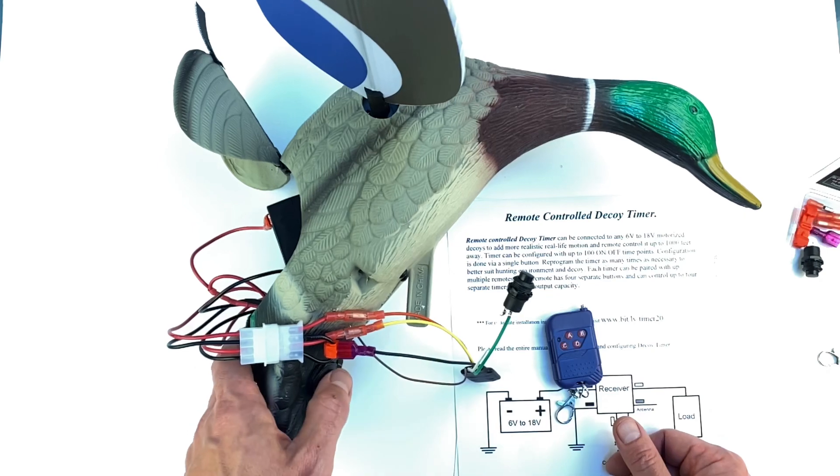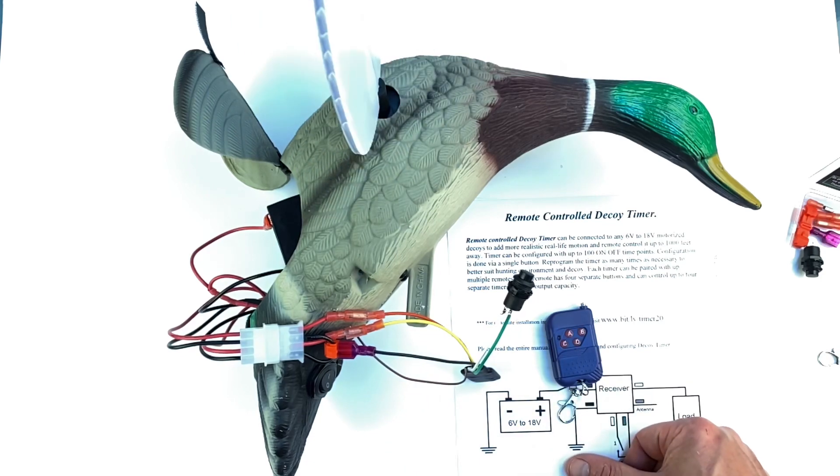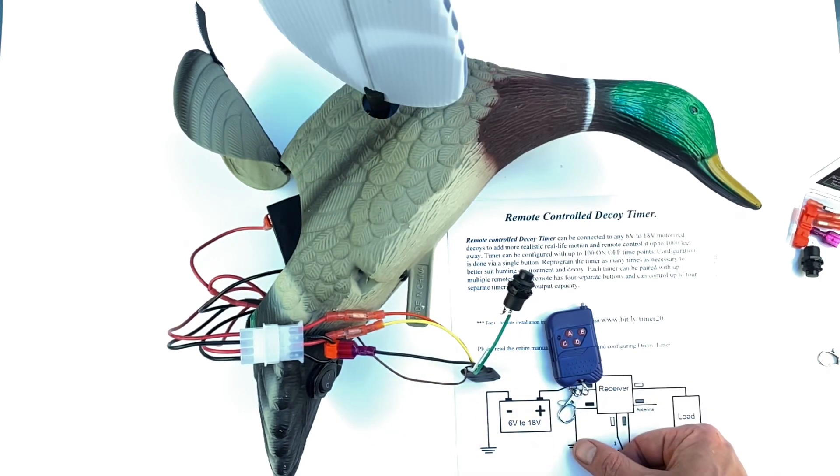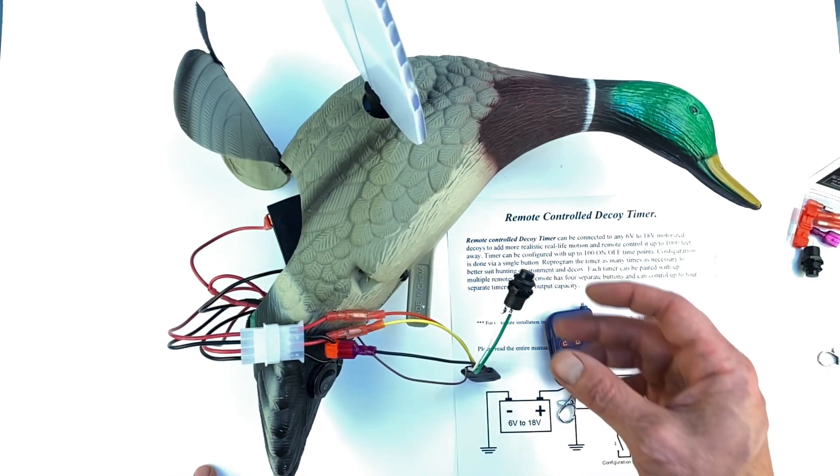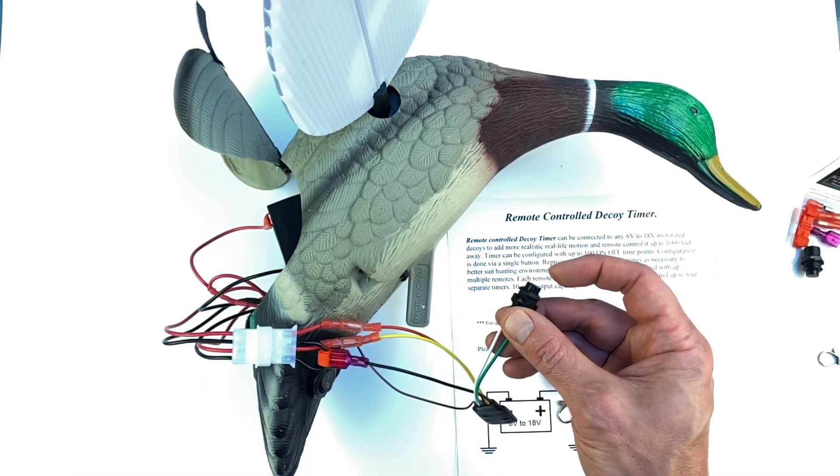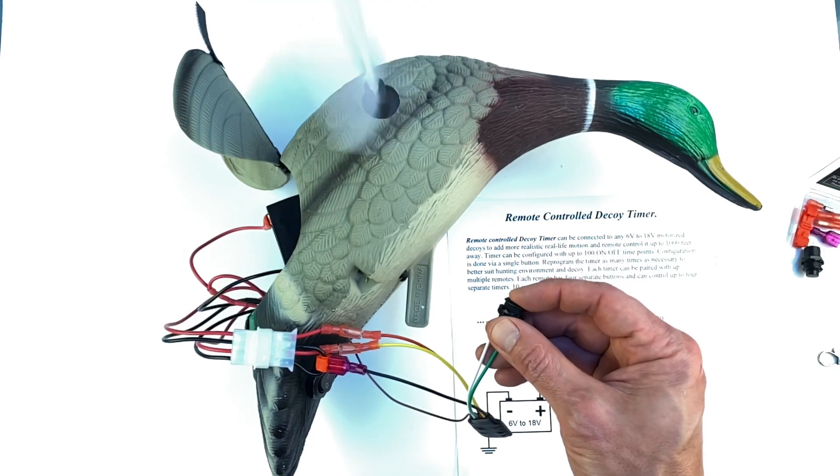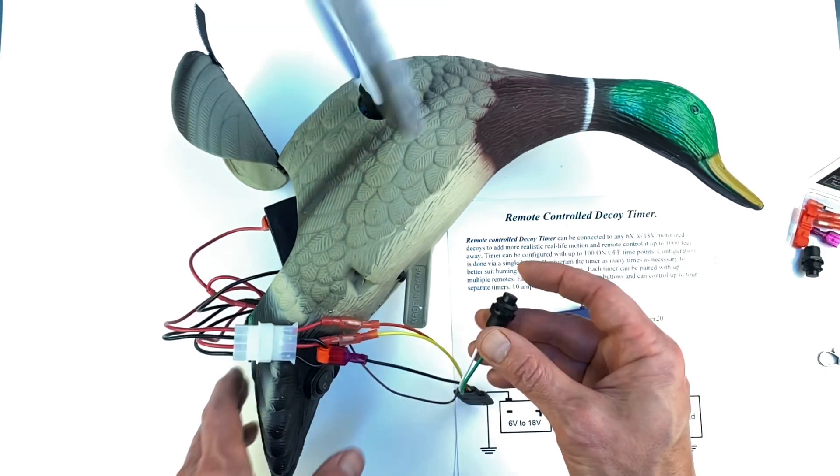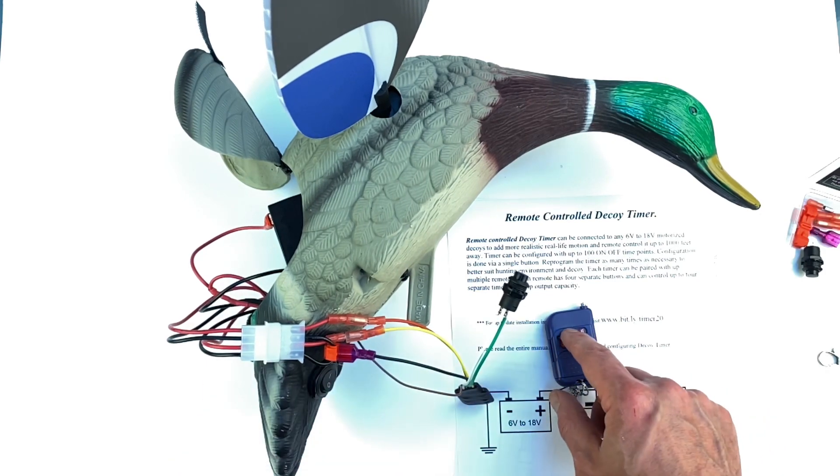That is it. So now when we turn the power on and push the remote, the mojo executes our sequence. If you need to change the sequence, you just push the button, turn the power on until the first motion, and then you can set up different sequences. Turn the power off and then it will repeat it.